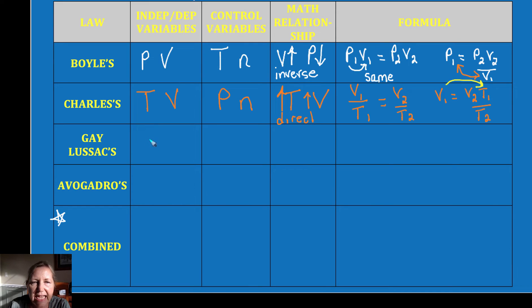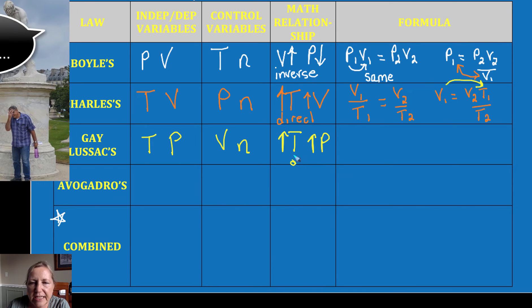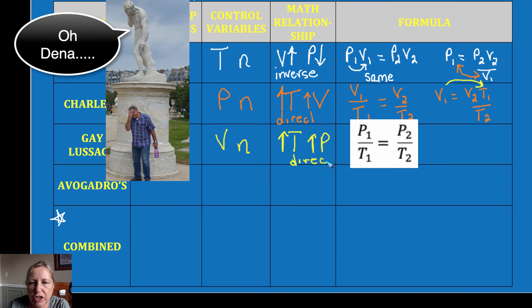Gay-Lussac. Gay-Lussac covered temperature and pressure and that means he kept volume and moles constant. If you increase the temperature when it's hotter out and you're going to have the air pressure pushes on the tires, either increases their volume or increases their pressure or both. So that is also a direct relationship. And so we would say P1 over T1 is equal to P2 over T2.